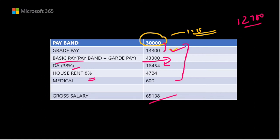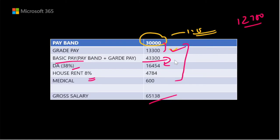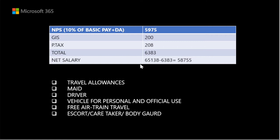Now we need to pay attention to the pension scheme. NPS is 10% of basic pay plus DA. So basic pay plus DA multiplied by 10% gives the NPS contribution. The total deduction is ₹5,975. Group insurance is 2% and PTax is also 2%.